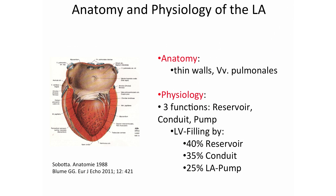The left atrium is very special because it's not myocardial tissue per se. It consists of specialized tissue from the pulmonary veins, and the walls of the left atrium are very thin.